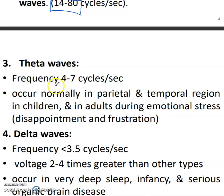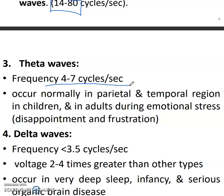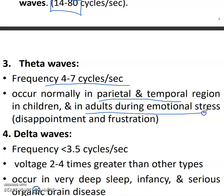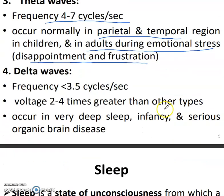Theta waves are low in frequency — four to seven cycles per second. They occur usually in the parietal and temporal regions and also occur in adults during emotional stress, disappointment, and frustration.